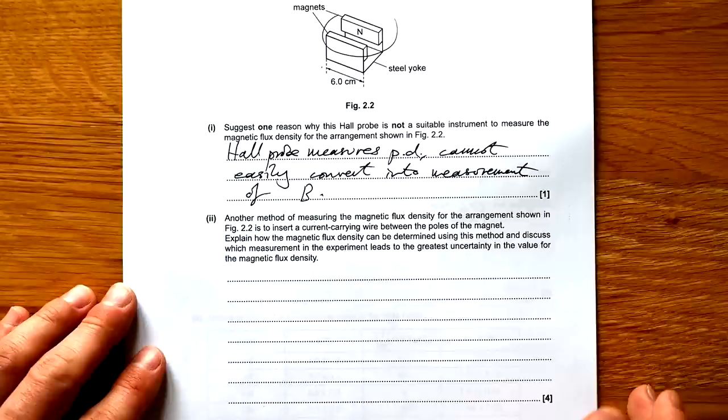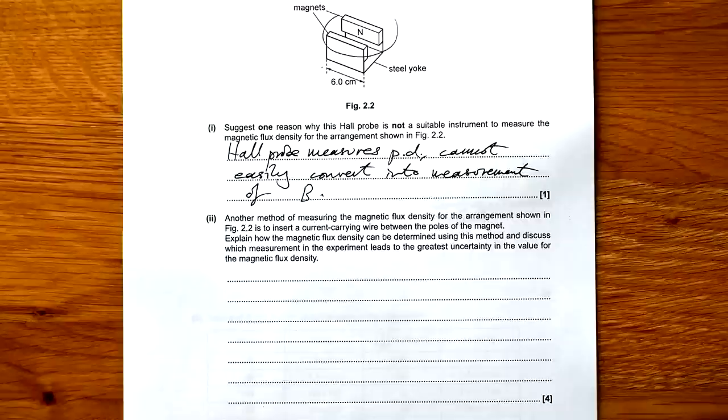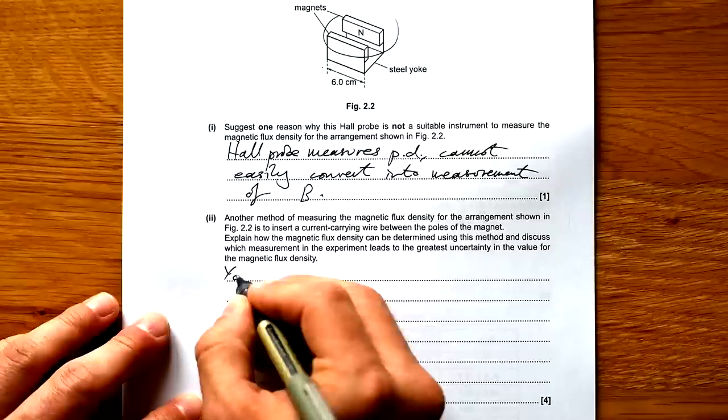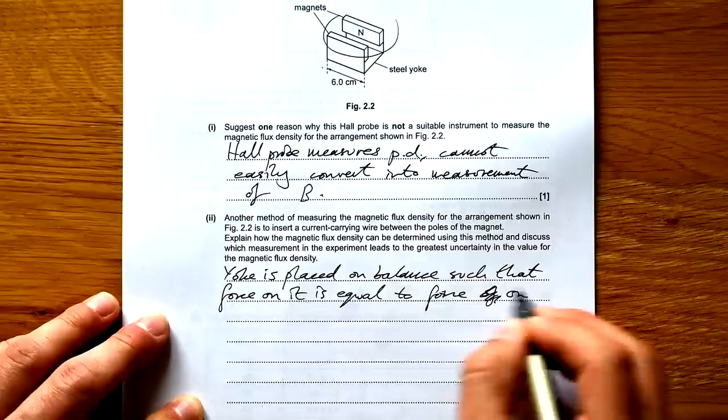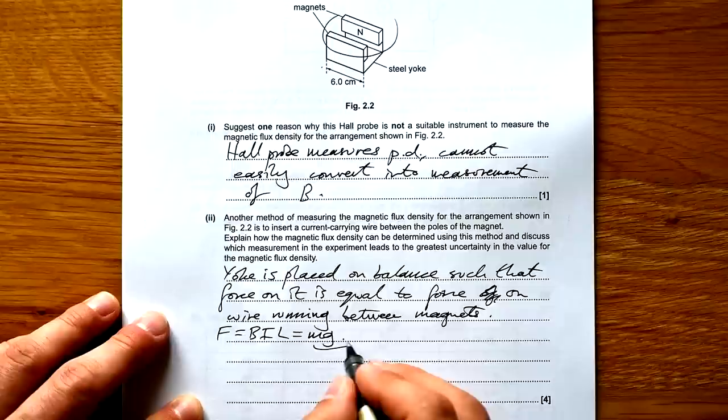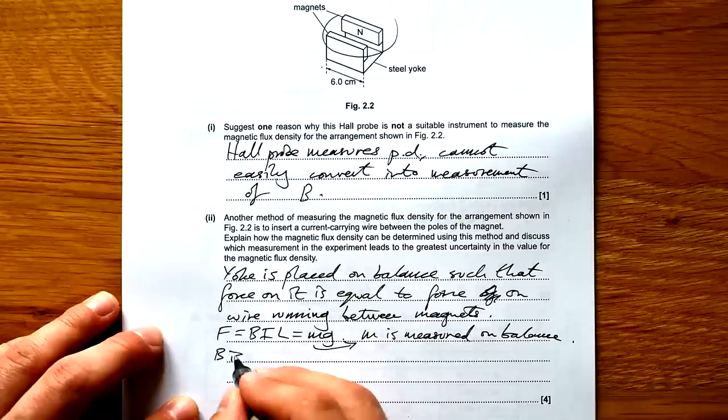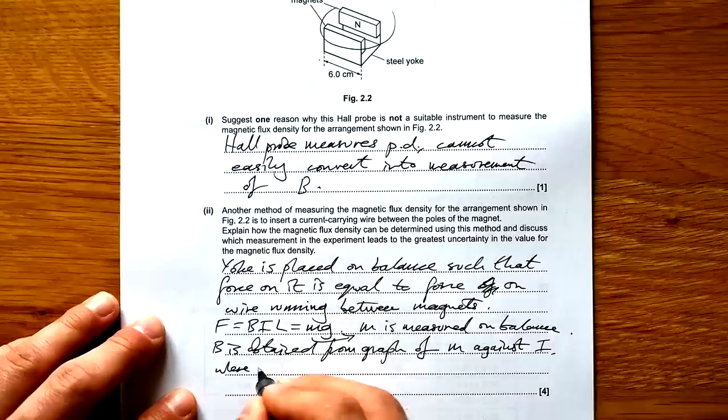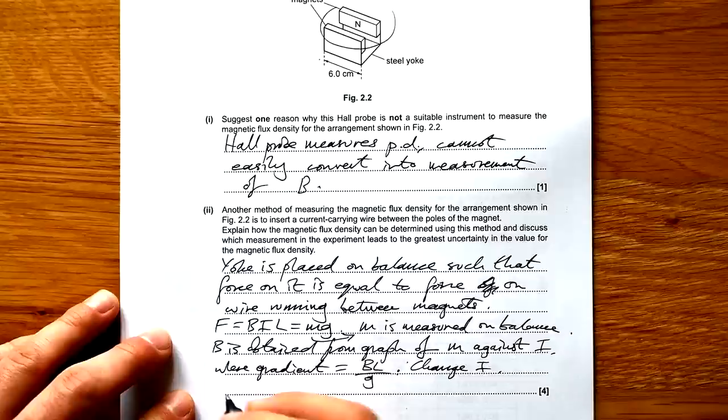Another method of measuring the magnetic flux density is to insert a current carrying wire. Explain how the magnetic flux density can be determined using this method and discuss which arrangement in the experiment leads to the greatest uncertainty. So the yoke is placed on balance such that force on it is equal to force on wire running between magnets. F equals BIL, and this is equal to MG. And M is measured on balance. B is obtained from graph of M against I, where gradient is equal to BL over G. Change I.